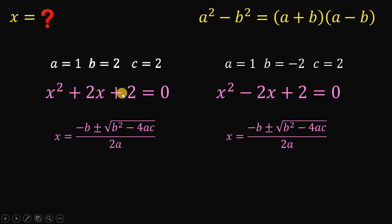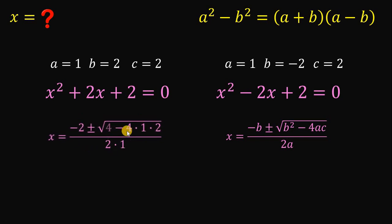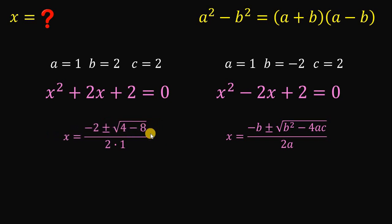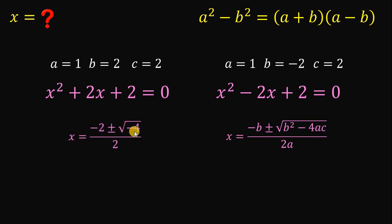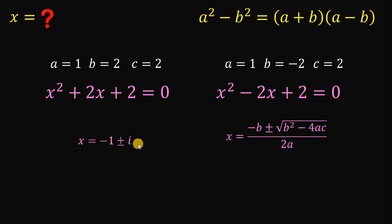Focusing on the first case, substituting into the quadratic formula and simplifying: 2 squared gives 4, and 4 times 1 times 2 gives 8, so we have 4 minus 8 over 2 times 1. That gives us negative 4 under the square root, and the square root of negative 4 is 2i. So we get negative 2 plus or minus 2i, divided by 2, which simplifies to negative 1 plus or minus i.